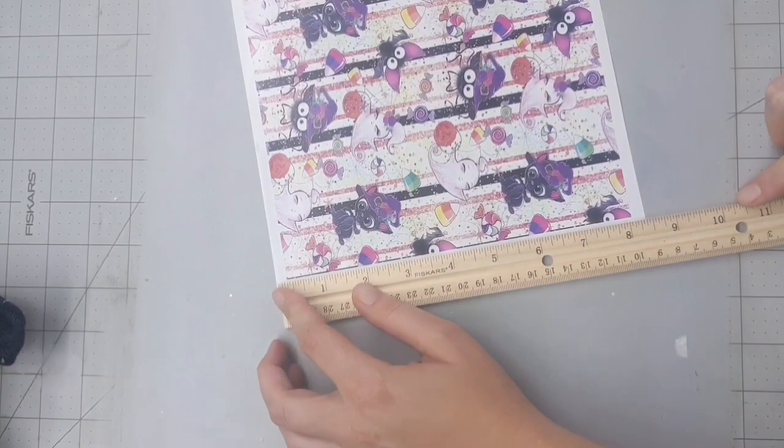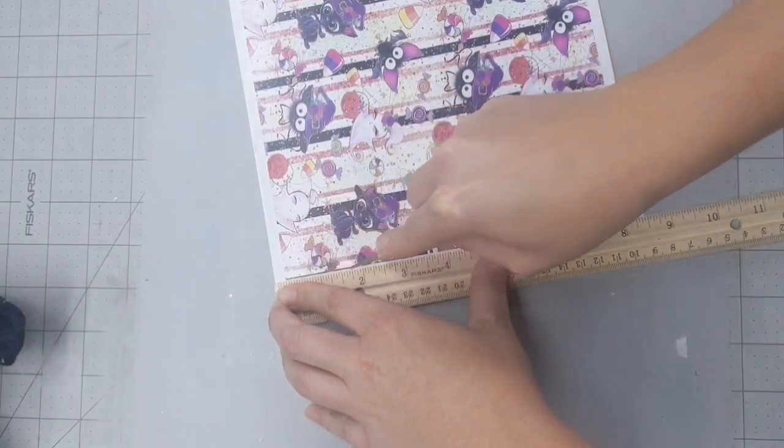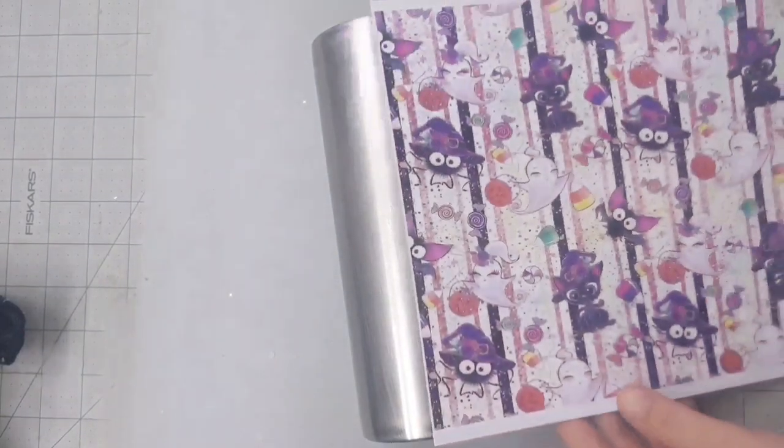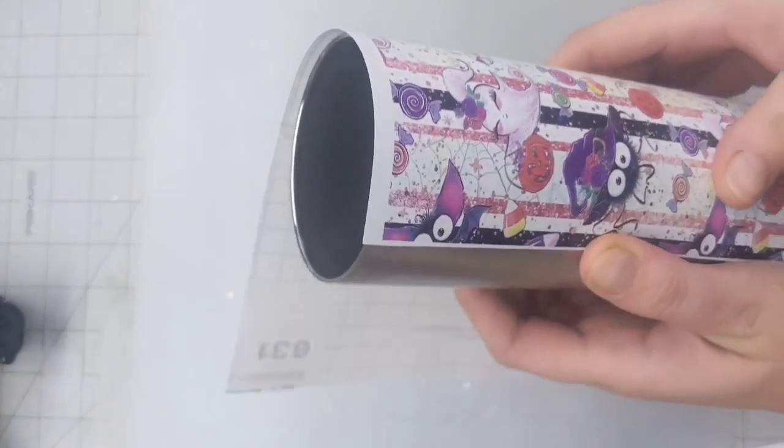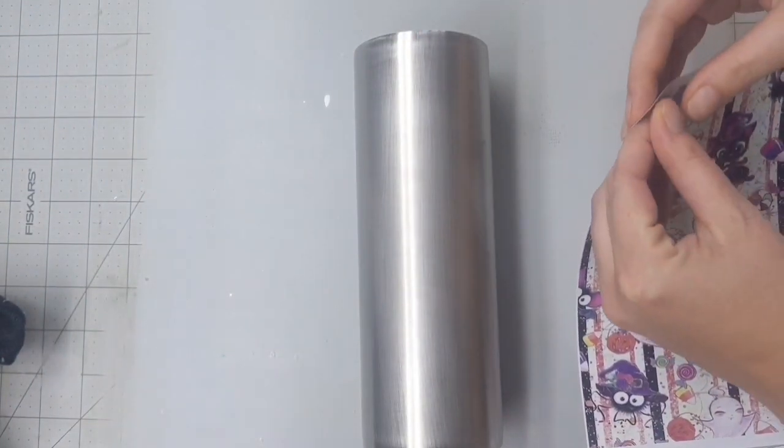So I only did one coat of that water-based polyacrylic. I let it dry for about 10 to 15 minutes and then I'm just cutting off the excess pieces of vinyl. I'll wrap it around, make sure everything is exactly the right dimensions, and then I'll start applying it to the cup.